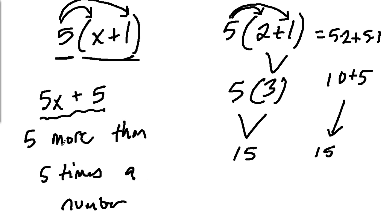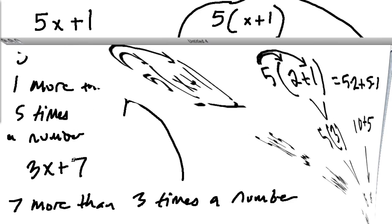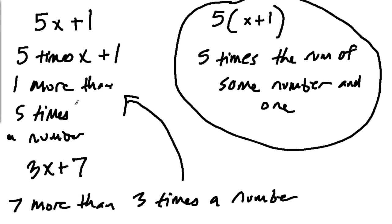And then building on this and looking at some other examples, again here we have 1 more than 5 times a number. What we could look at is stuff like this, 3x minus 10. This would be 10 less than 3 times a number.